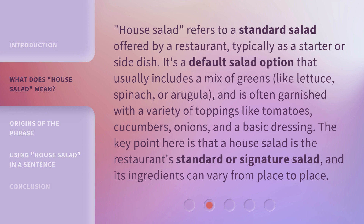It's a default salad option that usually includes a mix of greens like lettuce, spinach, or arugula, and is often garnished with a variety of toppings like tomatoes, cucumbers, onions, and a basic dressing. The key point here is that a house salad is the restaurant's standard or signature salad, and its ingredients can vary from place to place.